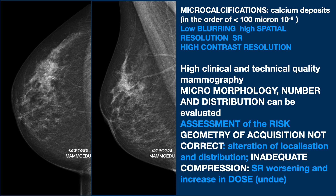What are microcalcifications? They are calcium deposits, and they are sometimes very small findings, in the order of a tenth of a micron. So it means that the blurring has to be very low — that is to say, the spatial resolution has to be very high. However, the resolution of microcalcifications is high contrast resolution. Even if they are very small, smaller than the pixel, they can generally still be seen because they are bright and they successfully impact the gray scale.